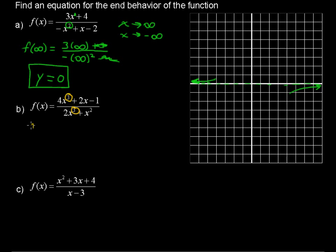then you can think about if we plugged in infinity, and I should say just a really big number because infinity is not a number, you would have 4 times infinity to the third over 2 times infinity to the third, and those would cancel. So you'd have 4 over 2. So what you're left with is y equals 2.